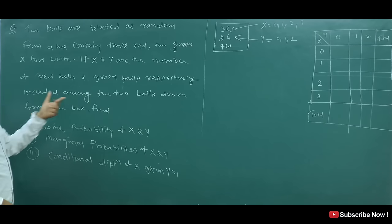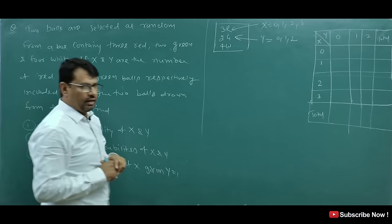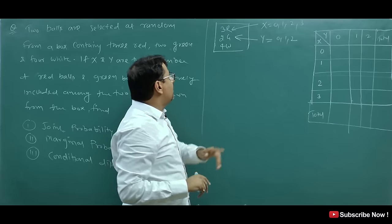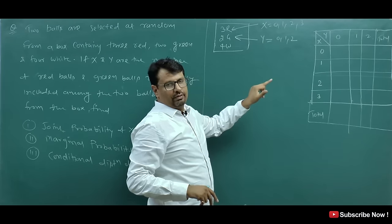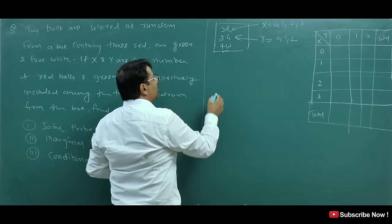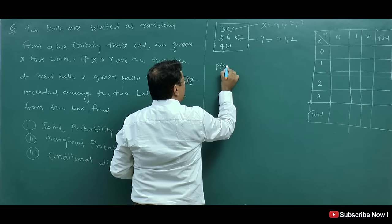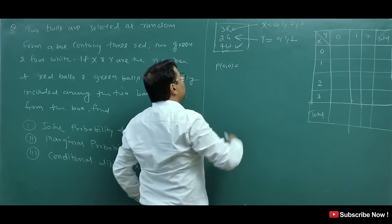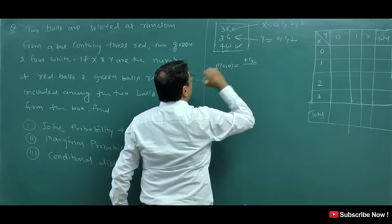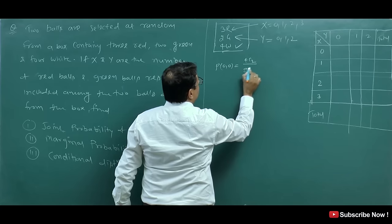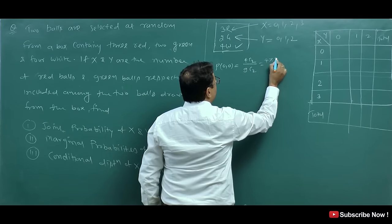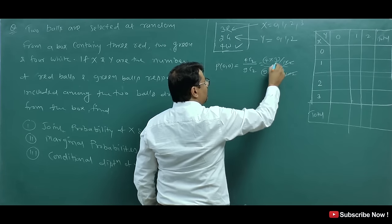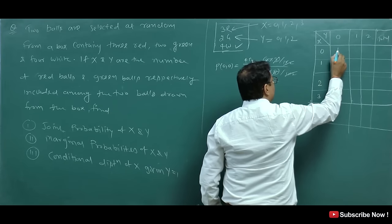Two balls are drawn from the box. First, let's compute P(X=0, Y=0). Both balls are not red and not green, so both must be white. The number of ways is 4C2 divided by 9C2. That gives (4×3)/(1×2) divided by (9×8)/(1×2), which simplifies to 6 divided by 36 = 1/6. Now for P(X=0, Y=1): one ball is green, zero are red, so one must be white. That is 2C1 × 4C1 divided by 9C2 = (2×4)/36 = 8/36 = 2/9.